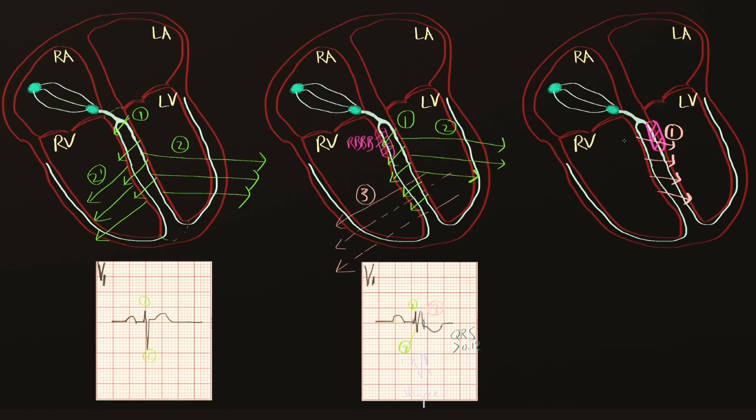Almost simultaneously to that, we're going to get depolarization of the right ventricle, which is going to happen normally through the right bundle branch. Let's call that two. And finally, the left ventricle is going to be a slow, abnormally depolarizing event that's going to happen from the septum and from the right ventricle going towards the left. Again, let's draw it in this purple color. Let's call it three.